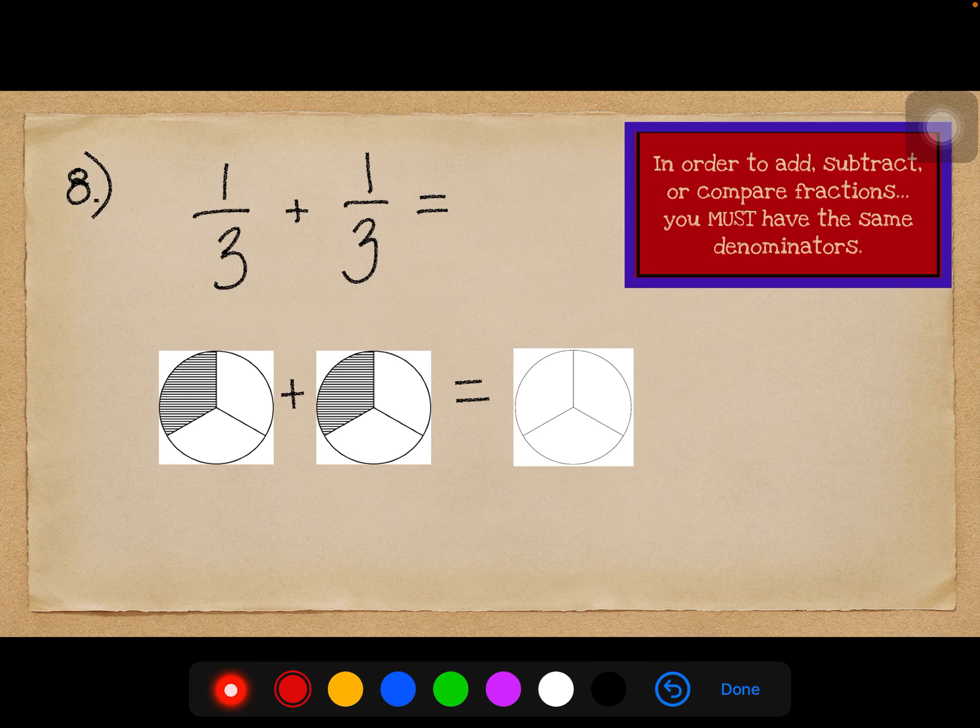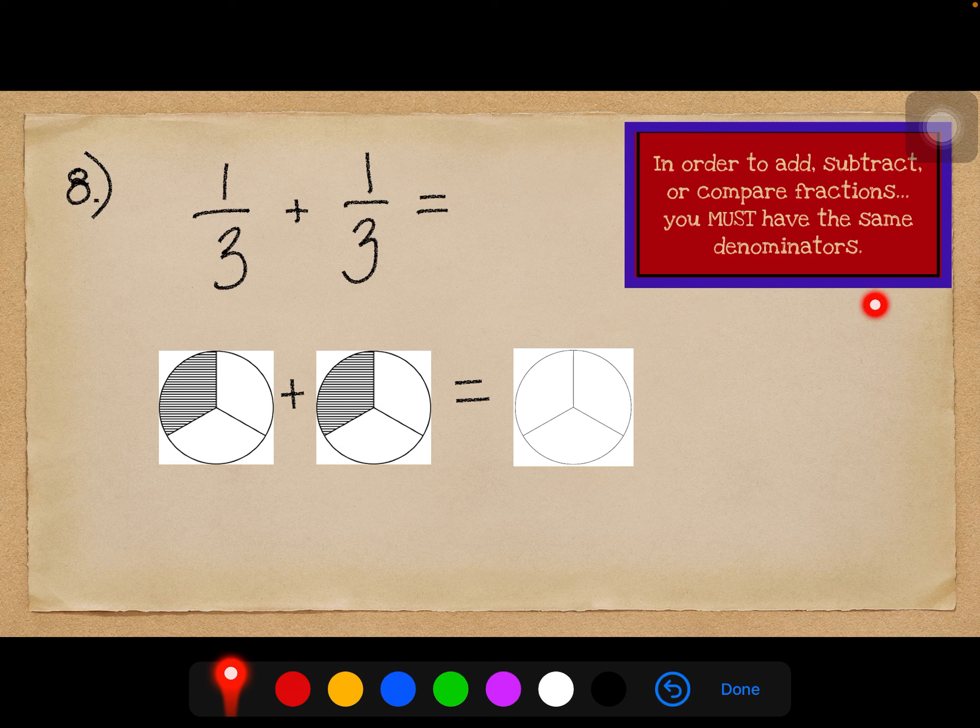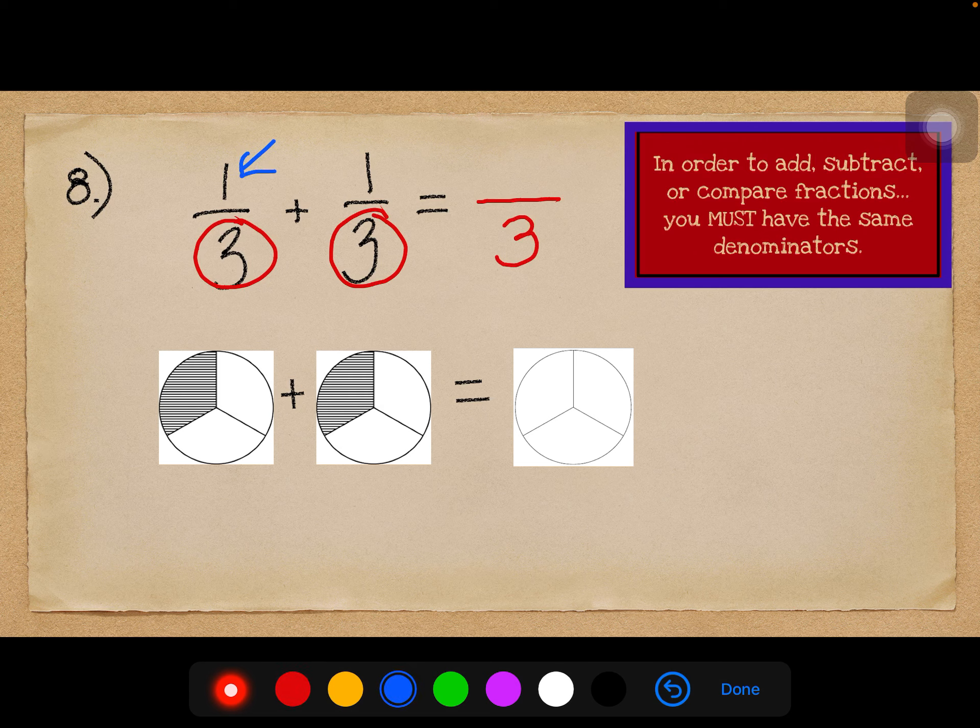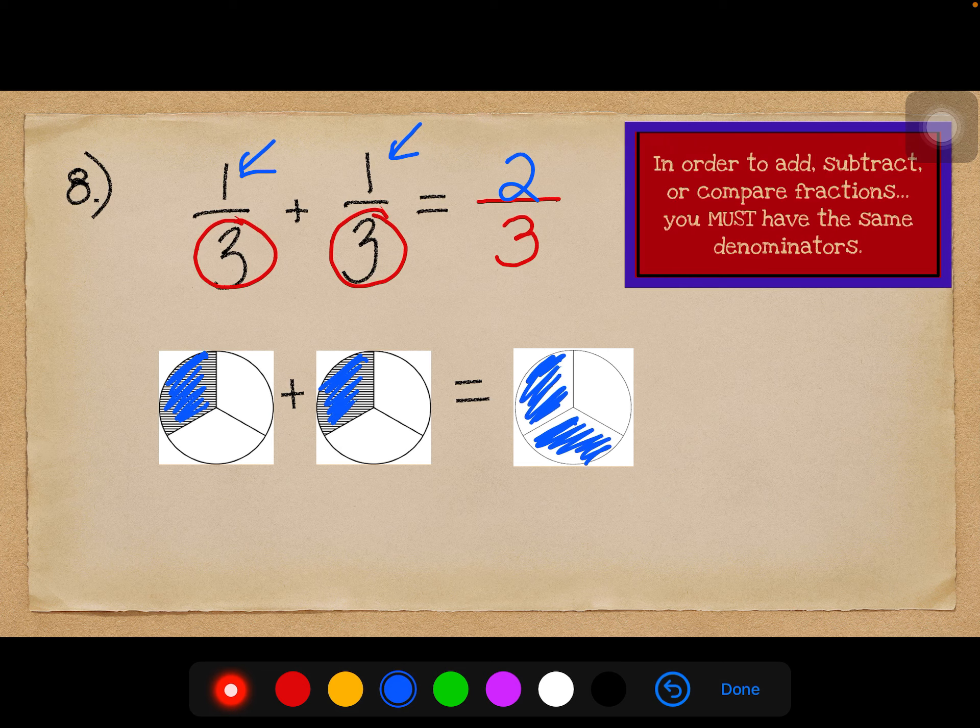Number 8. Okay, we have a little reminder over here. In order to add, subtract, or compare fractions, you must have the same denominator. In this case we do. It's a 3, so I know that my denominator in my answer is also going to be a 3. I just need to add my numerators. 1 plus 1 is 2. And if I add these up, here's 1 third, plus another third, and then if I color both of those over here, you can see that 1 third plus 1 third equals 2 thirds.